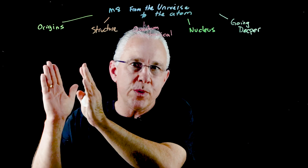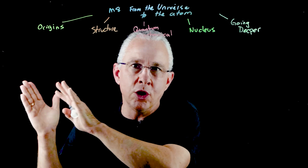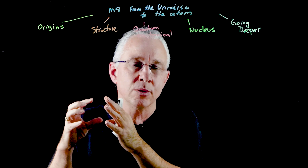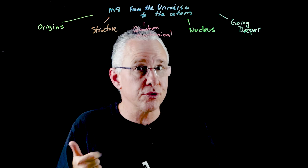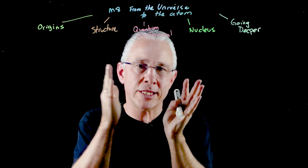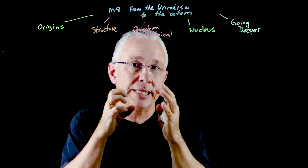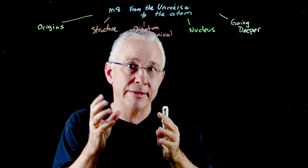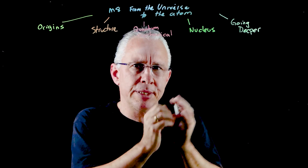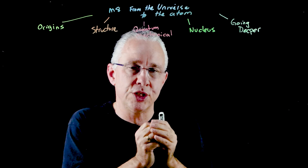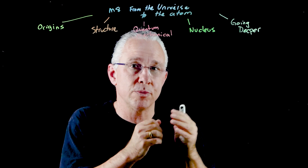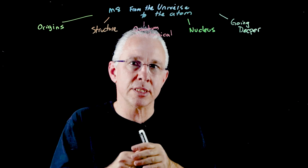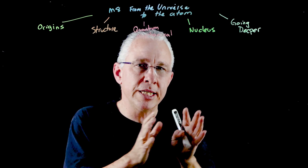We started with the origins of the elements and learned through experiments that the model of the atom shifted from an indivisible particle to something made up of smaller particles — namely protons, neutrons, and electrons. We learned those particles weren't simply explained through classical means, that electrons themselves have wave-like properties. We then explored deeper into the nucleus and looked at the energy of interactions between protons and neutrons within the nucleus.